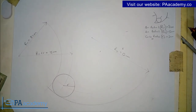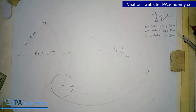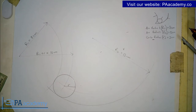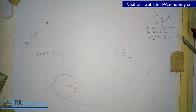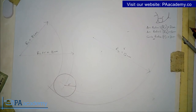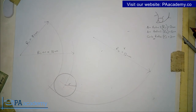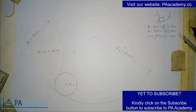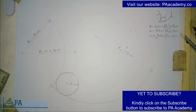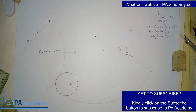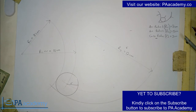If you check the description of this video you will find links to other similar examples — different ways you might be asked to draw a circle to touch either two arcs or one arc with a line. You can also check the playlist on technical drawing for more helpful videos. If you found this video helpful, please give it a like, share it, and subscribe to PA Academy. Leave any questions or video suggestions in the comments below. Thank you, and I'll see you in another video.